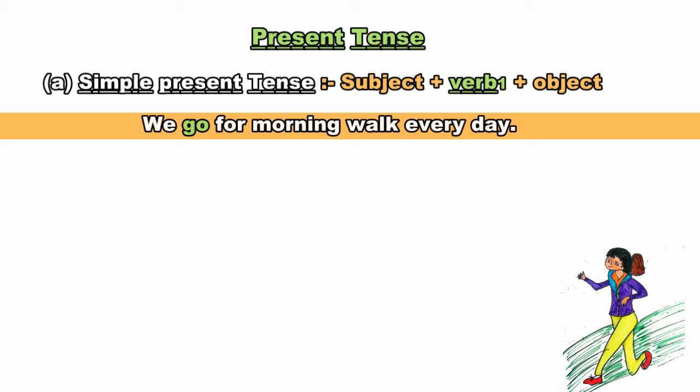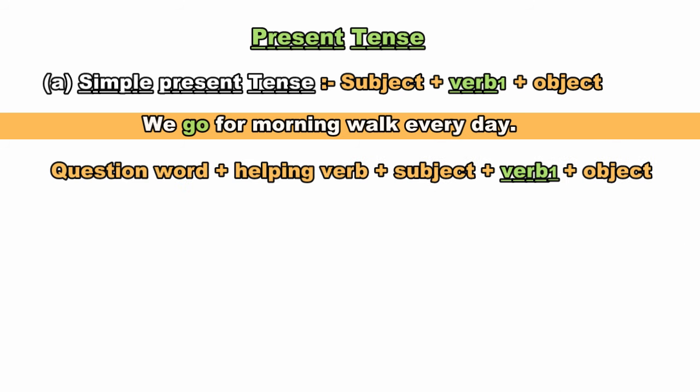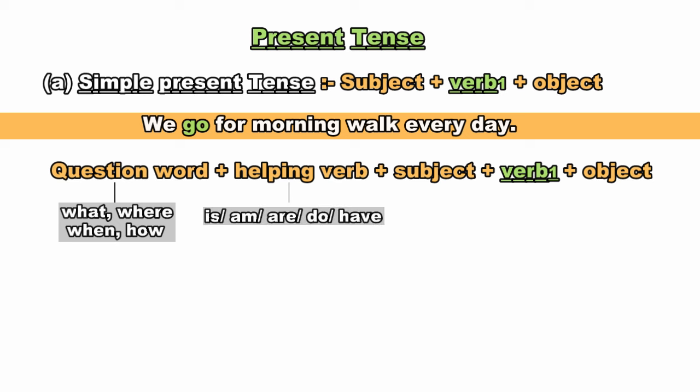This structure is for assertive sentences. Agar aapko simple present tense mein questions frame karne hon, to the structure is: Question Word + Helping Verb + Subject + Verb 1 + Object. Question words include: what, where, when, how, etc. Helping verbs — already discussed in the verb lecture — include is, am, are, do, have, etc. Question framing humein isliye samajh lena chahiye kyunki iska idea na hone par hum galat tarike se question poochte hain.